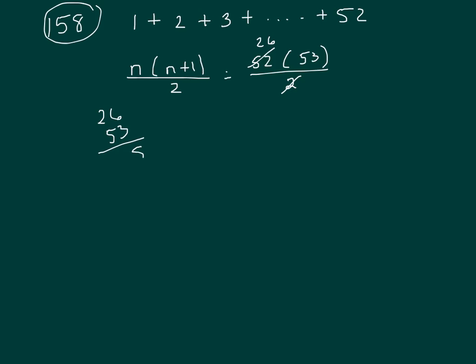26 times 53. That's 18, 7, 30, 13, 8, 7, 3, 1—1, 3, 7, 8. So the answer is C. Thank you.